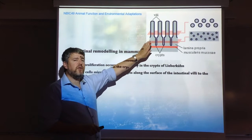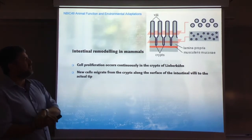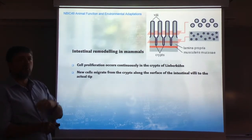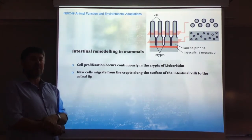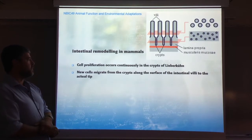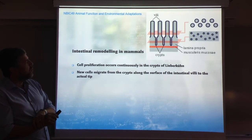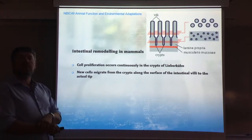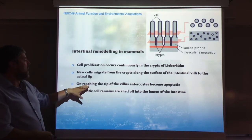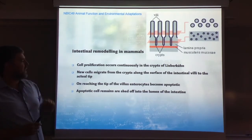In this type of tissue, cell proliferation occurs consistently and continuously in these crypts. The crypts of Lieberkühn are the places where the stem cells of the enterocytes — the stem cells that will yield or produce new epithelial cells — are located. These cells will be formed by mitosis here and will migrate slowly along the surface of the intestinal villi all the way to the actual tip, where they will be degraded and die.